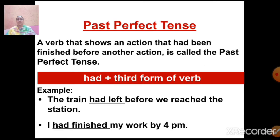Our next form of tense is past perfect tense. A verb that shows an action that had been finished before another action is called past perfect tense. It is used when two actions are completed in the past, and past perfect tense shows which action is completed before the other one. The formula is: had plus third form of verb (V3). There is only one option — 'had' — whether the subject is singular or plural. We will always use 'had' plus third form of verb.